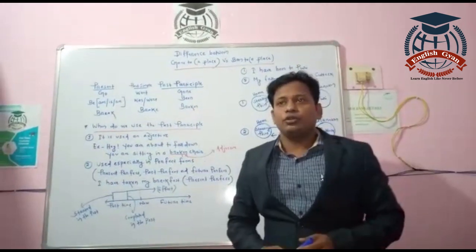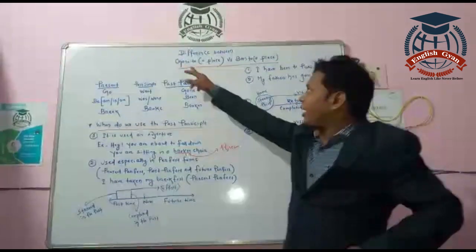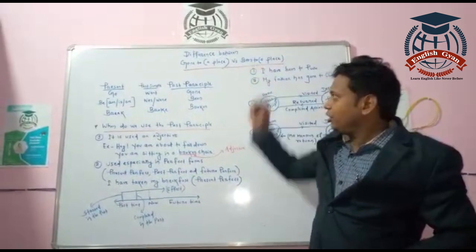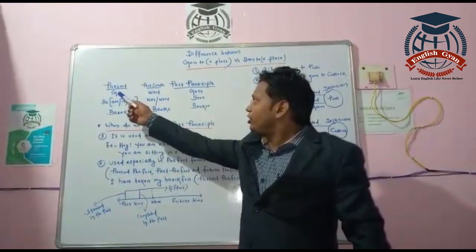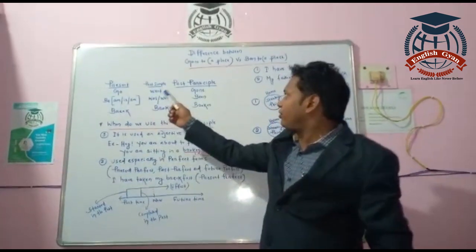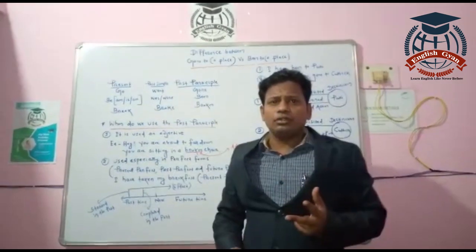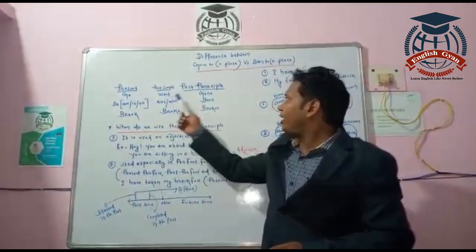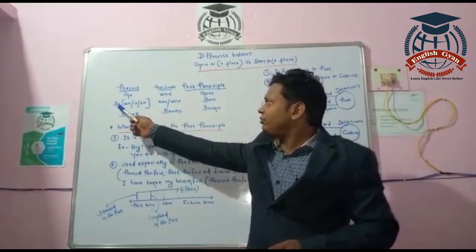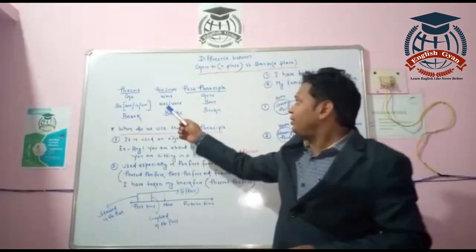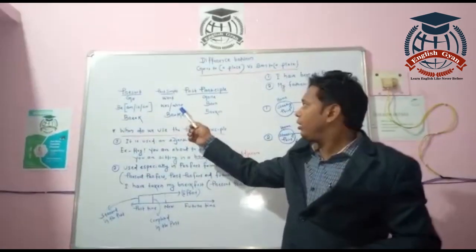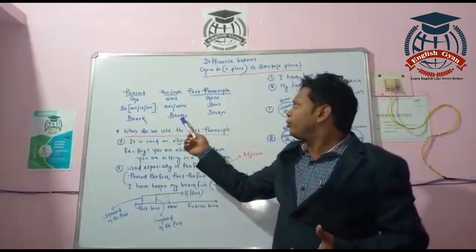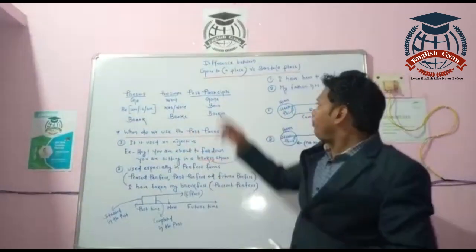This basically comes under high school grammar, so let's start from the beginning. We need to find out where 'gone' and 'been' come from. Every verb — whether regular or irregular — has three forms: the base form, the past simple form, and the past participle. For example, 'go' — 'went' — 'gone.' There's another verb 'be,' whose past simple is 'was/were' and whose past participle is 'been.'